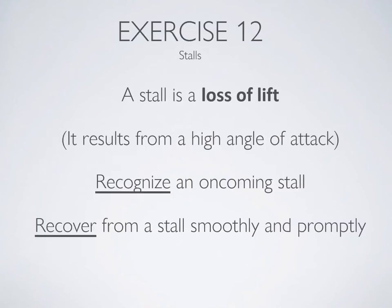Ideally, you've already read through exercise 12 in the flight training manual, so you already know that a wing stall is a loss of lift that results from a high angle of attack. This lesson is all about how to recognize an oncoming stall, identify a stall, and recover from a stall smoothly and promptly. We will cover a little bit of theory, but if you haven't already watched the ground instruction for slow flight or exercise 11, I highly recommend you review it before continuing, as we will be skimming over a lot of that material here.